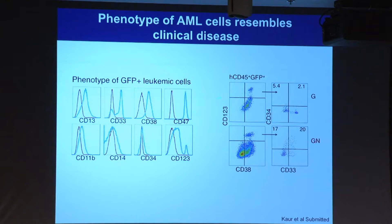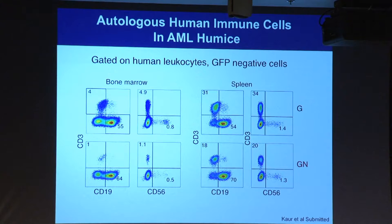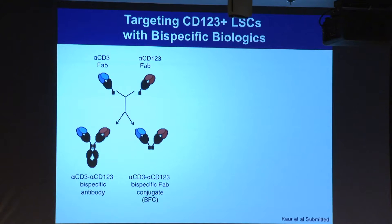The leukemia stem cells are CD123-positive and CD38-positive, and depending on other markers, some are positive for CD34 as well as CD33. Importantly, these mice also have a matched autologous human immune system, including CD3-positive T cells, CD19-positive B cells, and a small number of natural killer cells. This offers the possibility to evaluate cancer immunotherapies that require the presence of a human immune system.